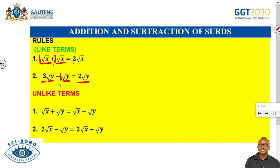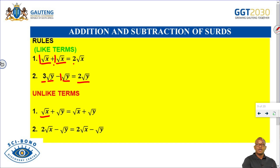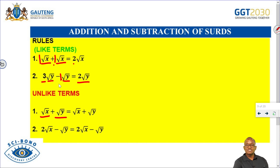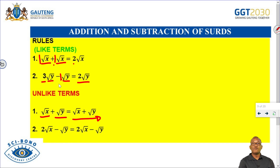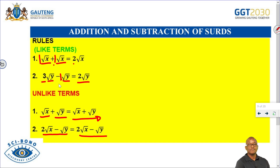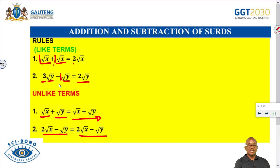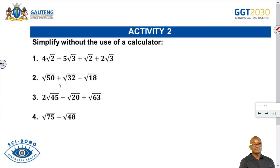The unlike terms: if you have root of x plus the square root of y, the variables inside the root signs are not the same. So they remain as square root of x plus square root of y — you cannot simplify them. When the numbers or variables inside the square root are not the same, you cannot add or subtract those root signs. Looking at activity number 2, we simplify without the use of a calculator and have four questions to answer.